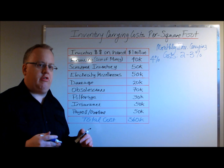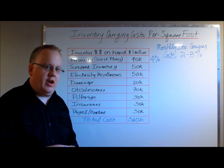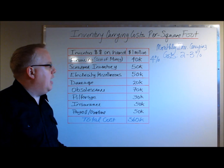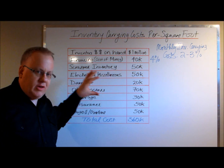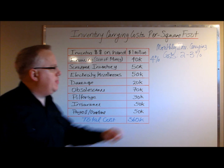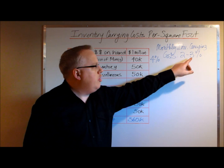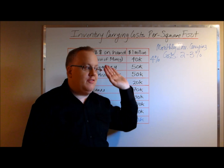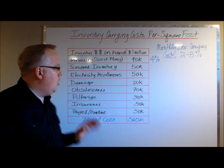It's common for companies to apply two to three percent to the inventory value on hand as a cost to carry that inventory. The reason you need to determine your specific inventory carrying costs is because you may be closer to two percent, closer to three percent, or even well above three percent. It's important to understand what your specific cost drivers are.